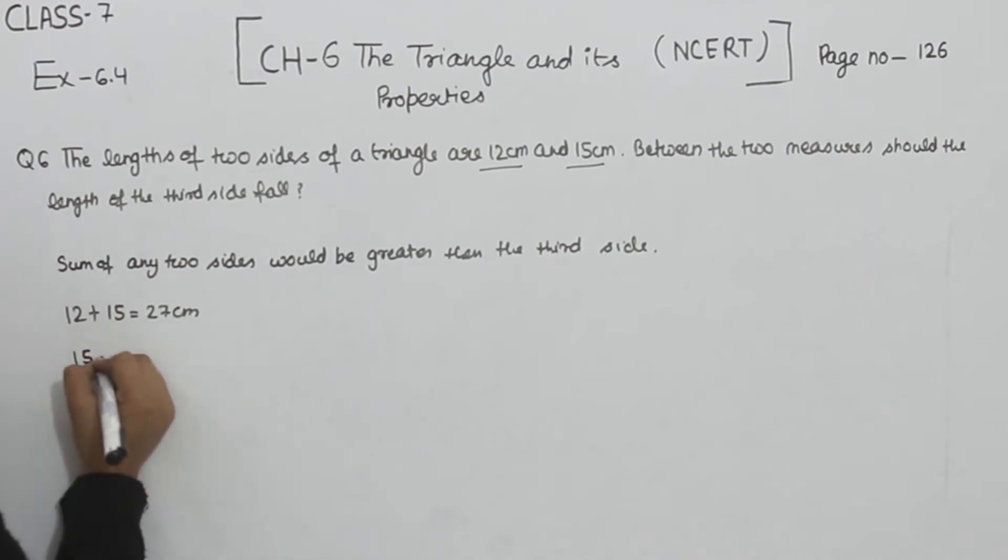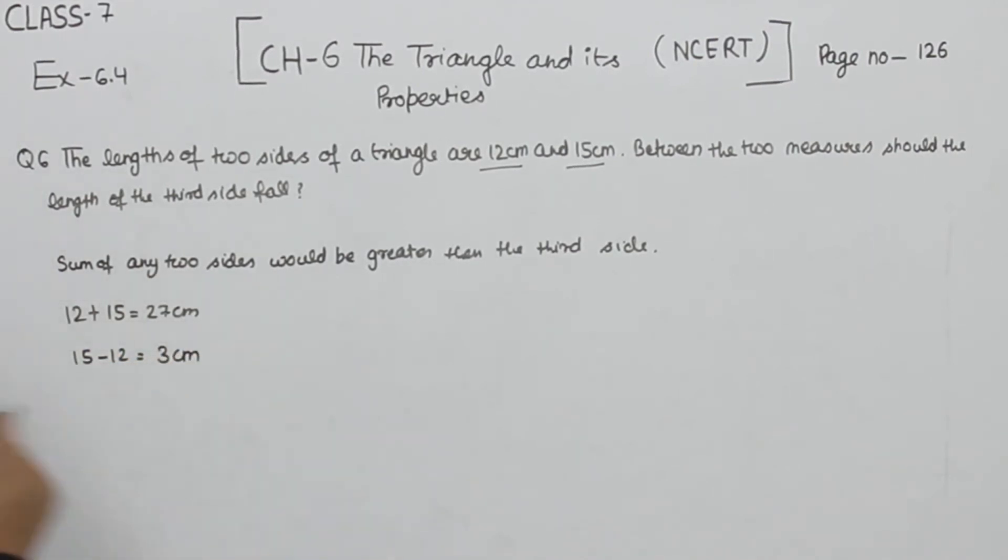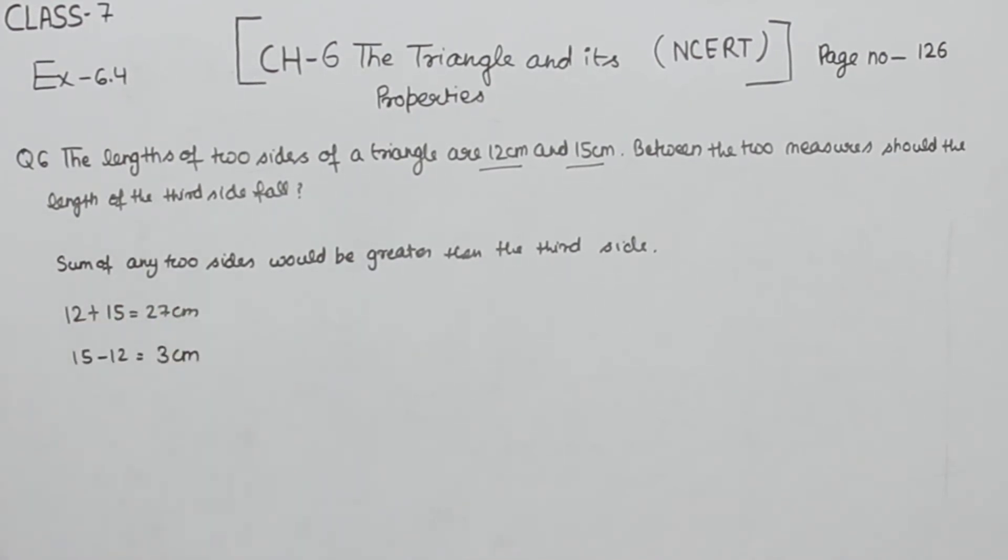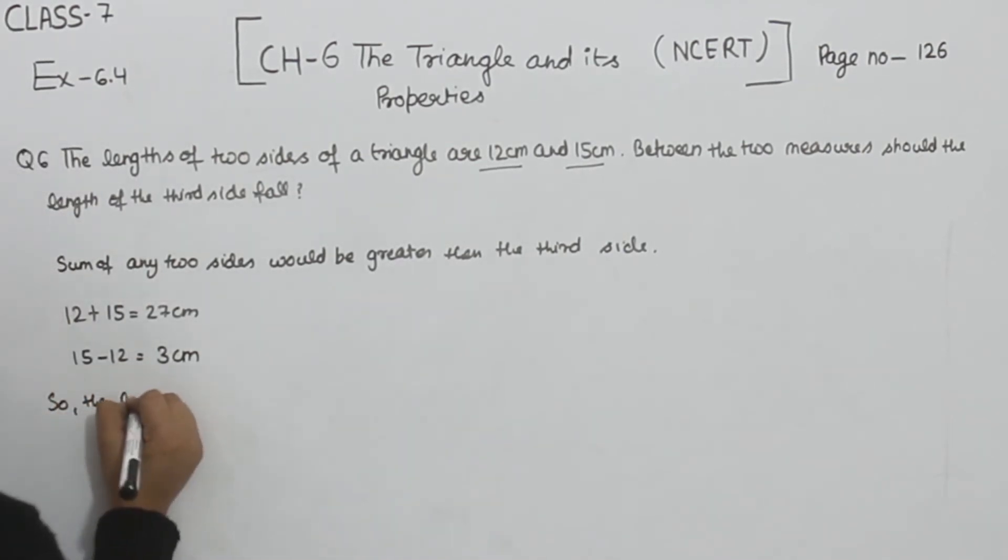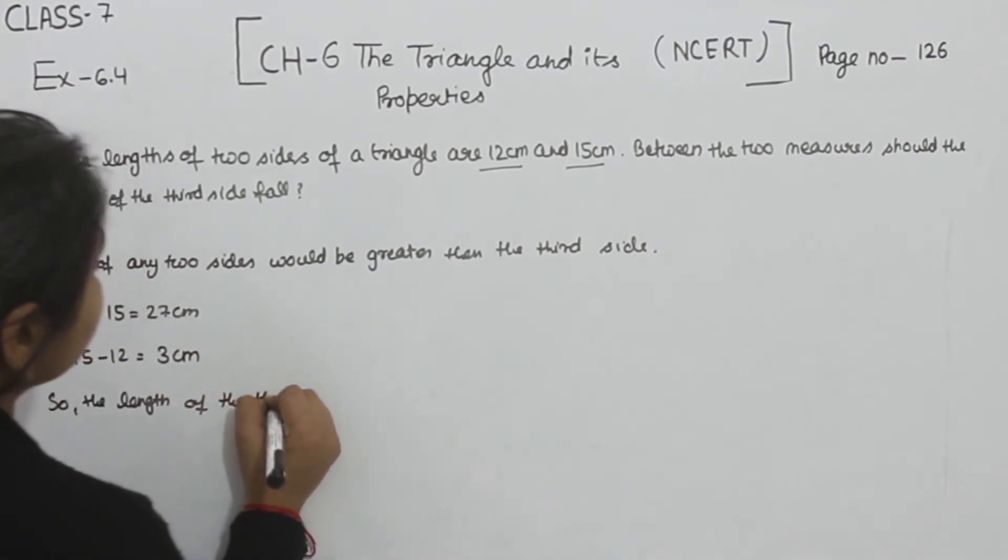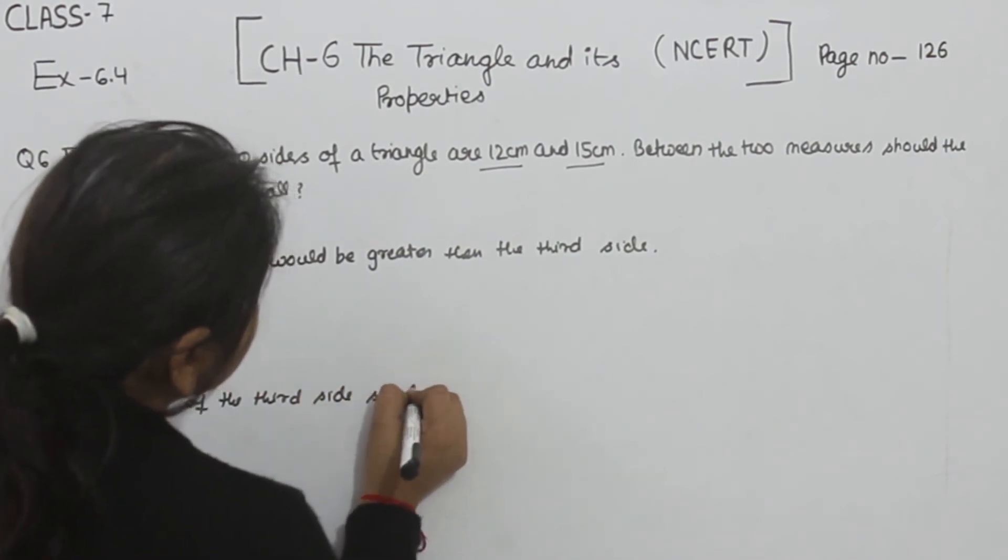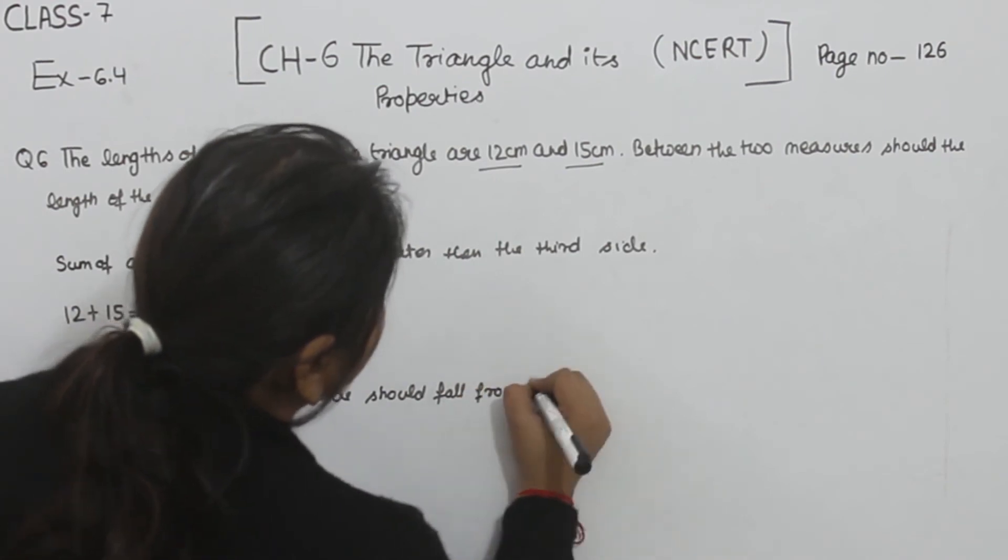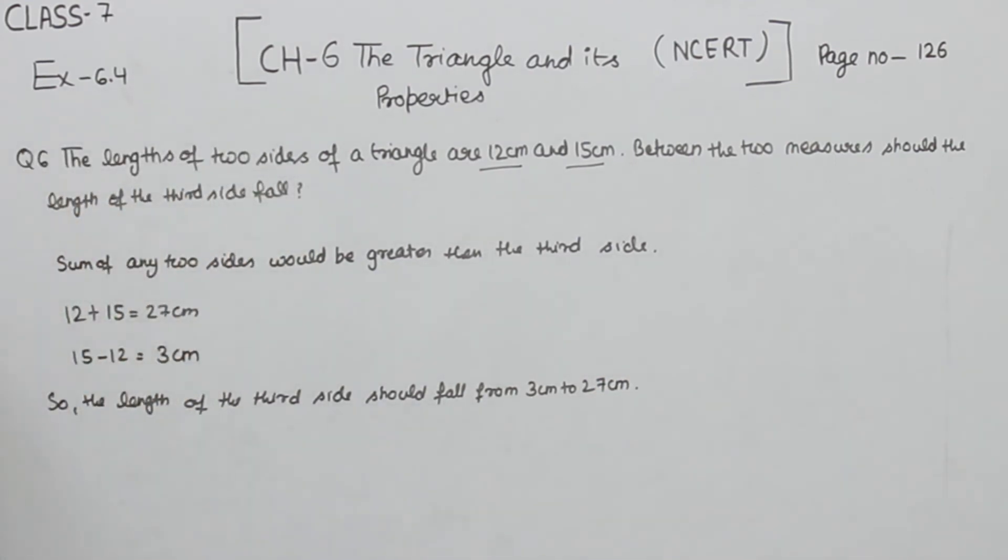For that one we will subtract 15 minus 12, this one is equal to 3 centimeter. So the side should not be less than 3 and should not be more than 27. So the length of the third side should fall from 3 centimeter to 27 centimeter.